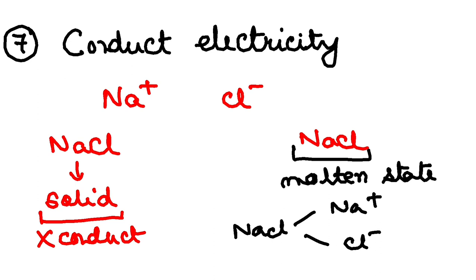One cation, one anion, positive ion, negative ion. These positive ions and negative ions, what they will do? They will conduct charges. That means, they will enable the flow of electricity.